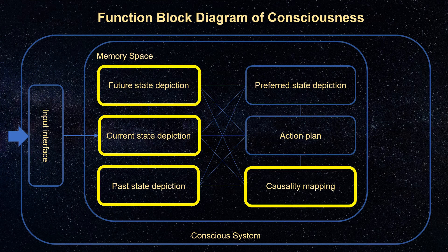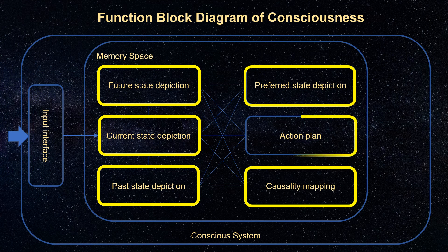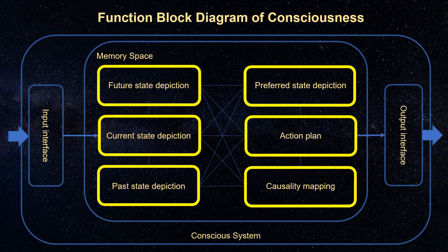The predicted future can be compared to the preferred state, which may come from random occurrence, at least initially. This is what we usually call goals. The discrepancy between preferred future and predicted future can be used to make an action plan. Finally, the action plan is executed by making changes to the environment through the output interface. The action can also be directed introspectively, such as identifying false input data as illusion or deception, correcting corrupted past memory, updating causality mapping, updating future prediction, and updating the action plan.